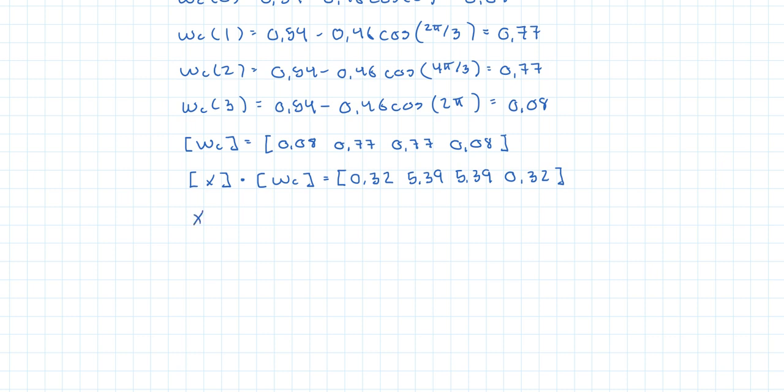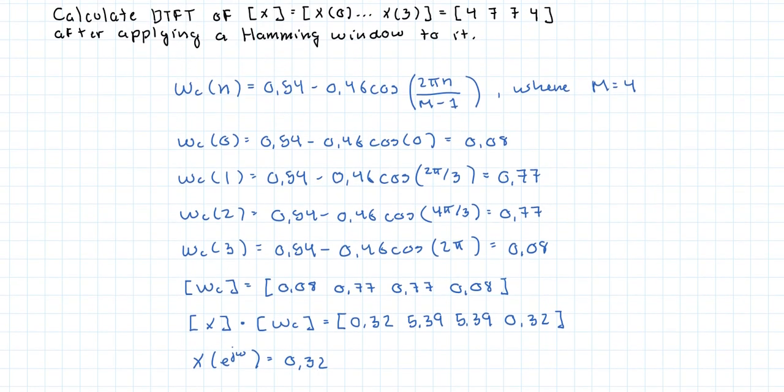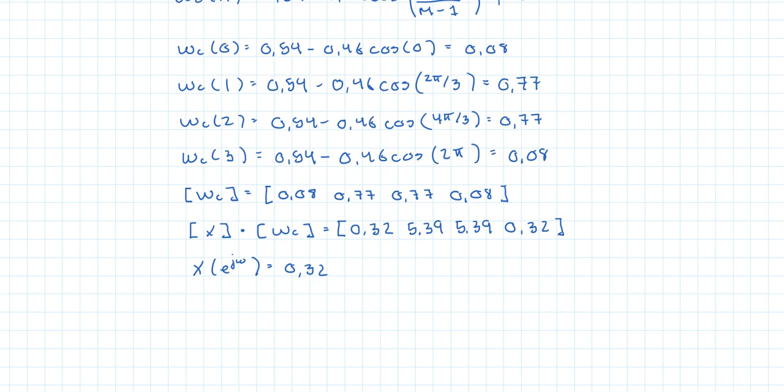So let's take the Fourier transform. That's 0.32, the indexes go from 0 to 3, so that's times e^0 plus 5.39e^(-j1ω) plus 5.39e^(-j2ω) plus 0.32e^(-j3ω).